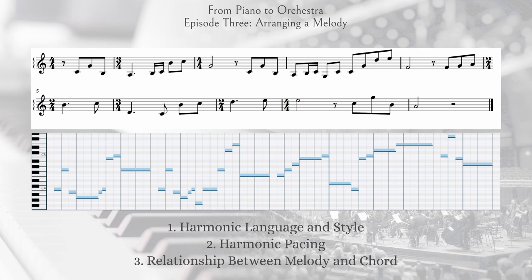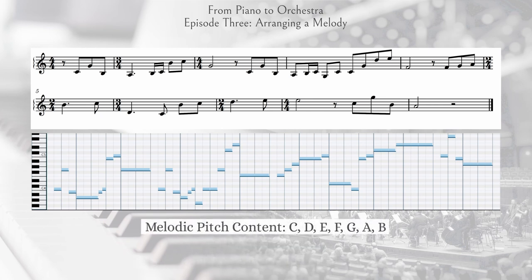Let's look at the collection of pitches that make up this melody. It features a diatonic collection of all white notes — no sharps or flats. That means if we're in a major key, we're likely in C major; if minor, likely A minor. We could also choose one of the other modes using that same diatonic collection. Just because the melody uses this collection doesn't mean the harmony has to stick to it, but to keep things simple today, I'll stick to triads and perhaps seventh chords built from these diatonic pitches.